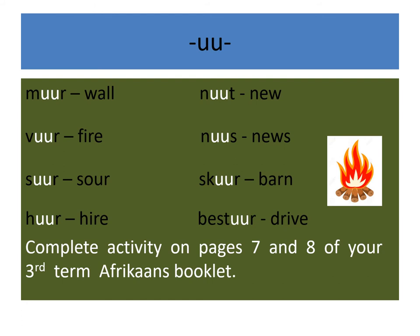Our next phonics is the e sound which has a little drag to it. It is made up of the letters U and U and is also found in the middle of words. Words like mir, fear, seer, hear, nit, miss, skier, and bestier make up this sound.